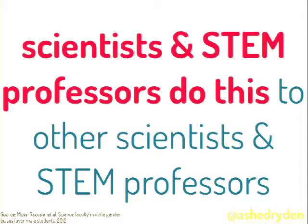Scientists do it to each other. STEM professors do it to each other. There was an experiment at Yale where distinguished professors were given two identical resumes — one for John, one for Jennifer — for a laboratory manager position and asked to rate them one to seven. Across the board, men and women gave John a four and Jennifer a 3.3, with the exact same resume and wording — the only difference was the first name. When asked how much they'd pay each, Jennifer was offered 87% less. Very intelligent people who know these biases exist still did it.